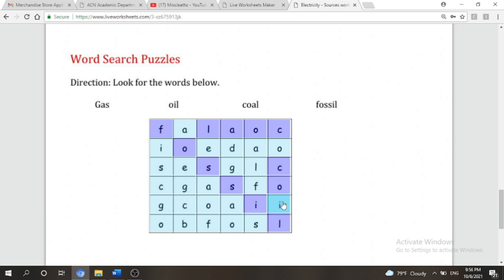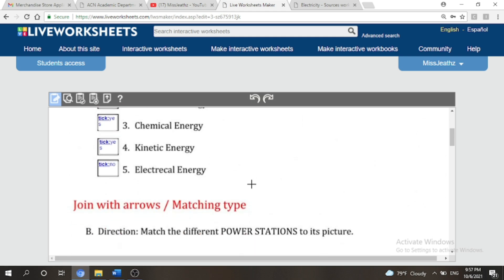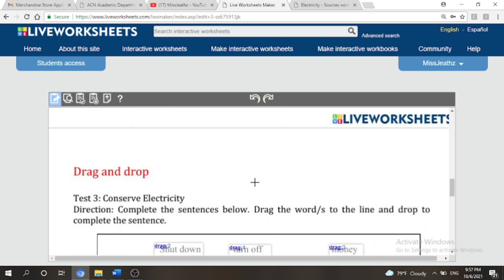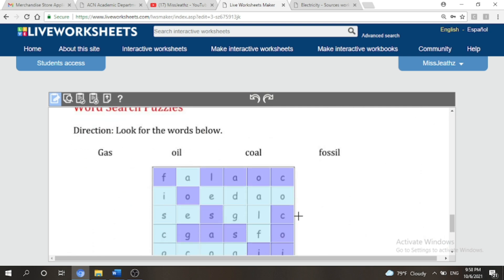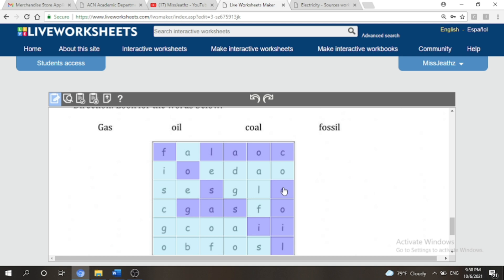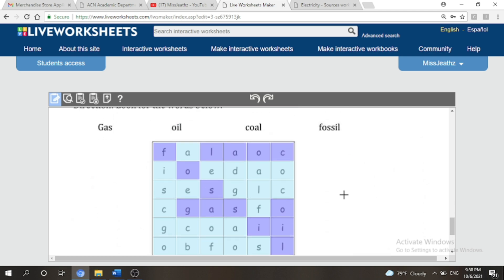Now if you find any error after saving it, nothing to worry because we can still edit it. You just have to go to your name account, go to my worksheets, and then click edit. And there you go. The error here is that this should not be coil but it should be oil. So we just have to remove that one and then save it again.